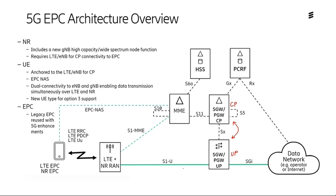This is all User Plane. We have the data network over here — the APN, Access Point Name — and then we have the External Bearer Interface, and then our usual S1 User Plane Interface. This could be terminated in the Secondary Node for Split Bearers, and could also be terminated in the Master Node for LTE Bearers, such as VoLTE Bearers, as an example.